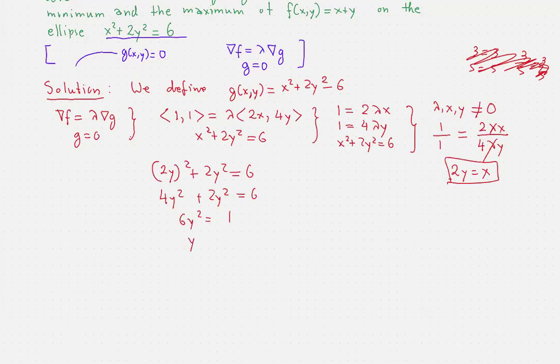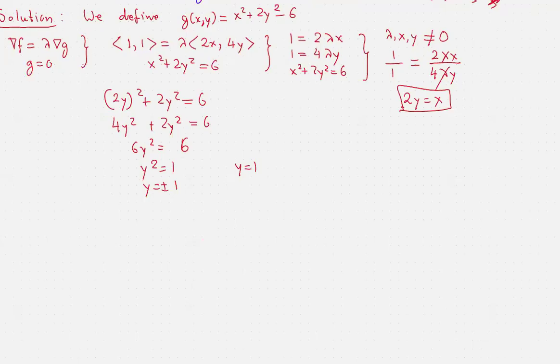So if y is 1, then this implies that x is 2. And if y is negative 1, then that implies that x is negative 2. So this gives us two critical points: the point 2, 1 and the point negative 2, negative 1.